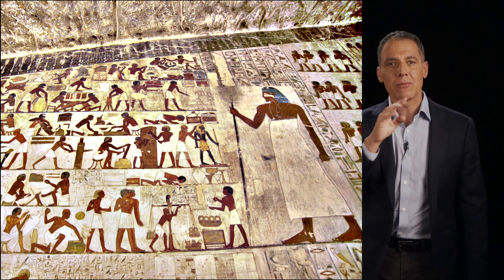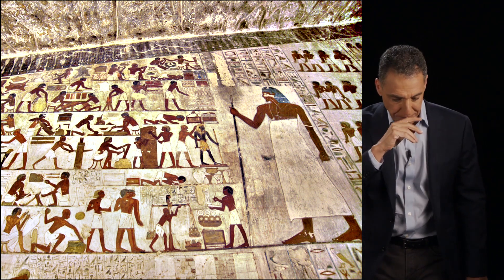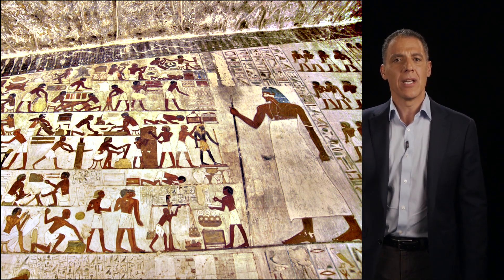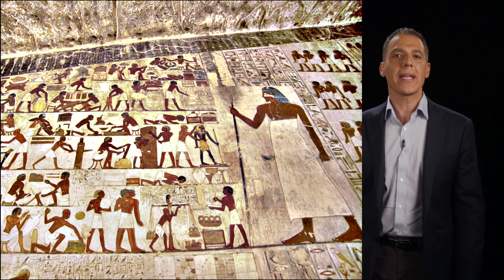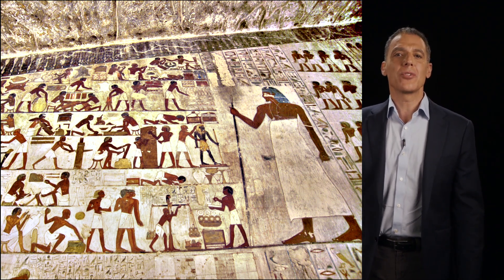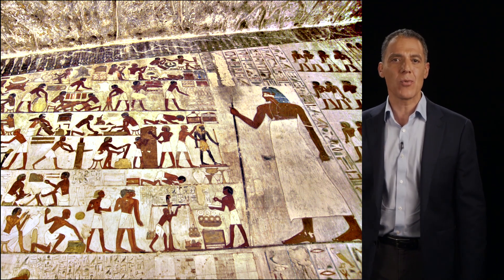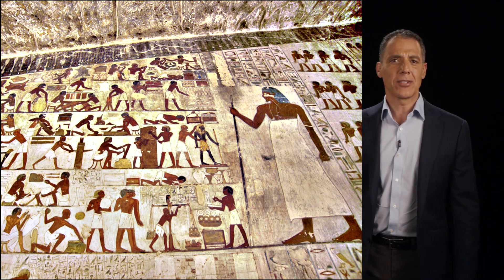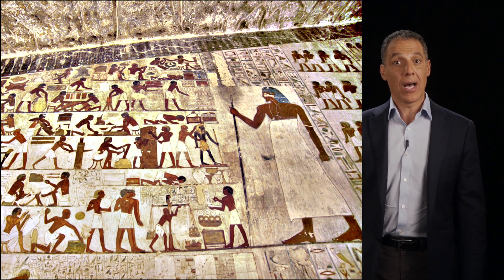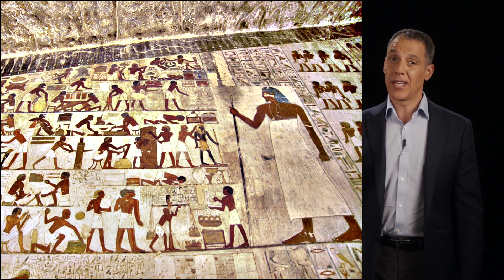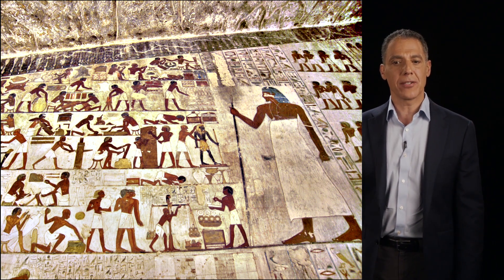I remember being on the plane returning back from Cairo to New York, and my father asked me: you're the computer scientist, you're the guy who does digital imaging — why can't we do something about this? Why can't we make better pictures digitally in post? And I thought, well, he's right. That's a planar surface, and I just learned about planar homography. I wonder if we can apply it here.